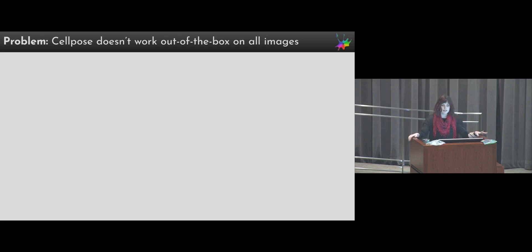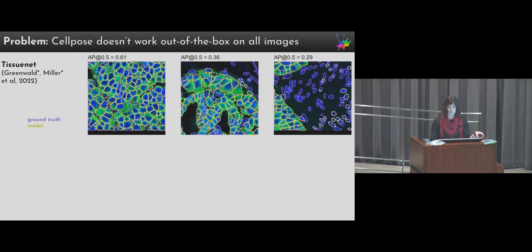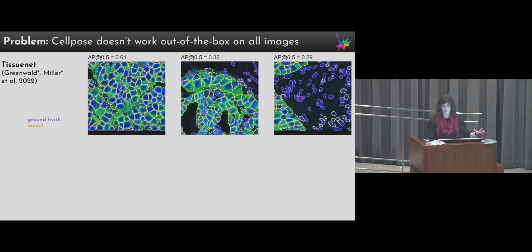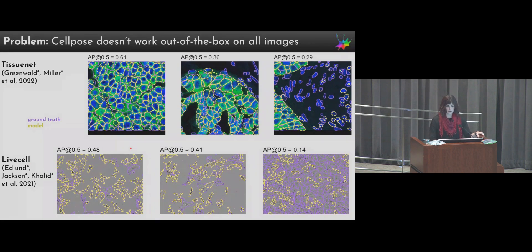We were fairly happy for the use cases we had, but it still didn't work out of the box on all images. For example, the TissueNet dataset came out which has a lot of images that look like this, and if we run CellPose on these images out of the box it looks okay — ground truth is in purple, the CellPose model in yellow. It looks decent on some images, but on others there are nuclei labeled in the ground truth that CellPose doesn't label. CellPose has never really been trained to segment nuclei without cytoplasm labels. We also tried another recent dataset from live cell imaging from several different cell lines, and running CellPose out of the box misses quite a few of these cells as well.